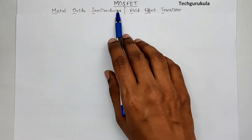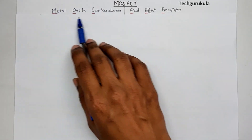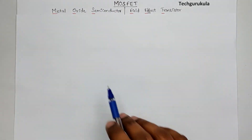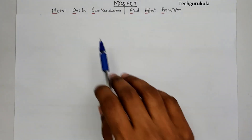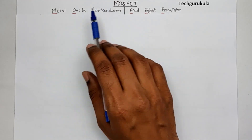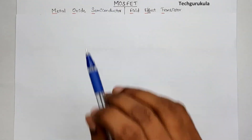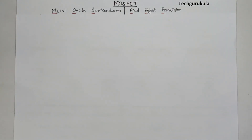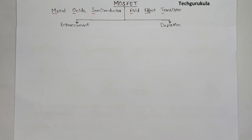We have seen the MOS diode in the previous videos, where we understood a MOS capacitor which is also called a MOS diode. MOSFETs are broadly classified into two categories: one is enhancement type and the other one is depletion type MOSFET.